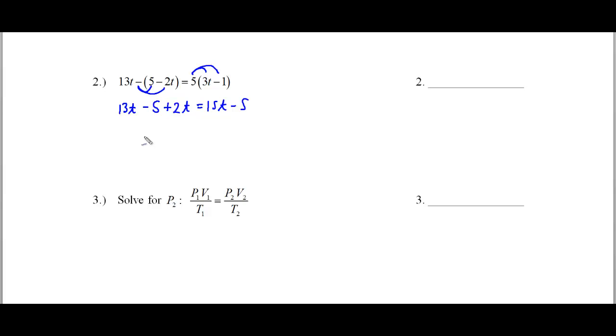If you collect like terms here, what you get is 15t minus 5, and that's equal to 15t minus 5. Well, this is considered an identity where the left and right side are equal equations, because if I subtracted 15t from both sides and added 5 to both sides, I'd have the true equality of 0 equals 0. So the answer is all solutions for all real numbers of t, or you can put down it's an identity.